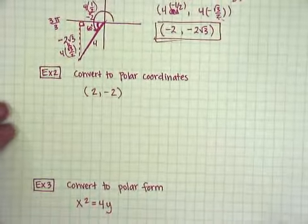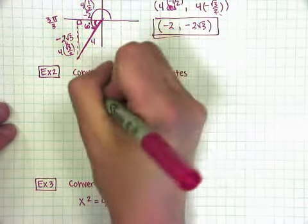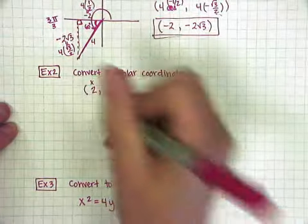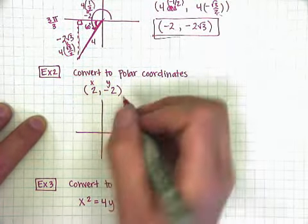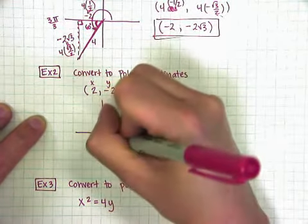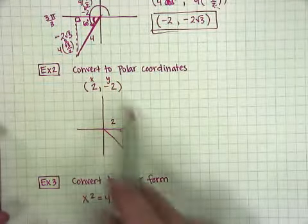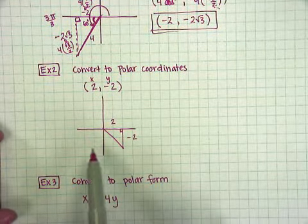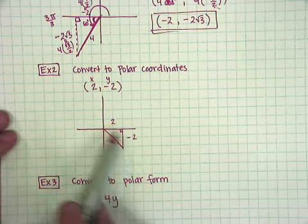All right, for the second example, we're looking at converting from rectangular to polar. So this is my x and this is my y. One way you can do this is you can start by drawing your triangle. So let's see, I've gone forward 2 and down 2. So over 2, down 2. And if you take the time to draw your pictures accurately, it'll help you kind of figure out what the answer should be. So notice that I have 2 and 2 here. This obviously has to be a 45-45-90 triangle.